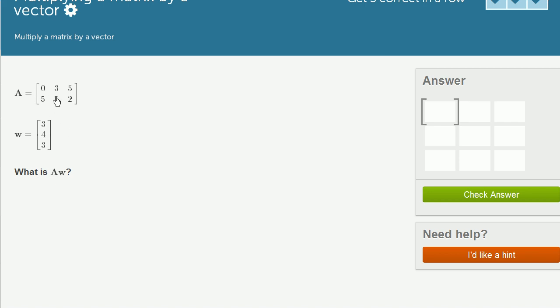So we're multiplying matrix A here by vector w, and they ask us what is A times w. So let me get my scratch pad out and let's think about this.